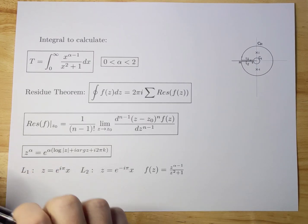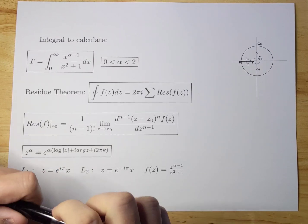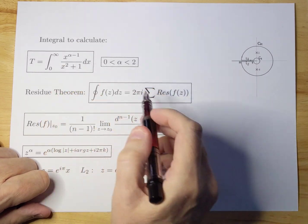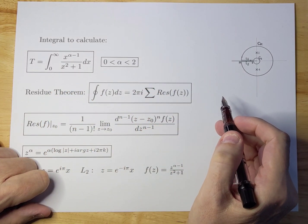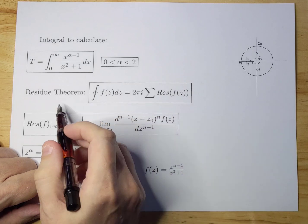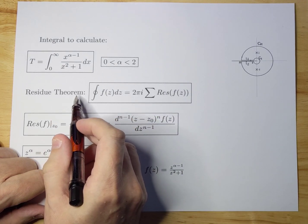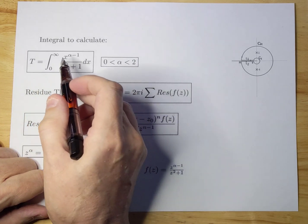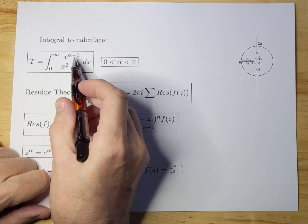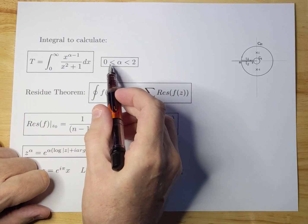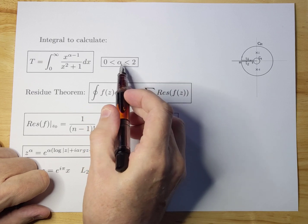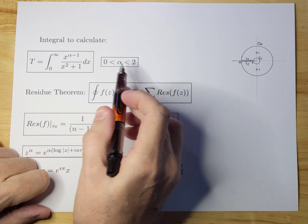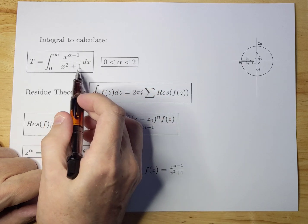Today I'm going to talk about an integral that is not easily calculable through conventional means. I'm going to use the residue theorem to calculate this integral. The integral is x to the power of alpha minus 1, where alpha varies between 0 and 2 — it has to be smaller than 2 for reasons we will see later — divided over x squared plus 1.